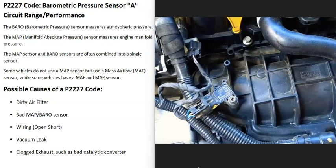It reports that information to the computer, which then adjusts the air-fuel ratio mixture going into the cylinders. When you get a P2227 code, the computer is seeing some kind of problem with this sensor, so it needs to be troubleshot to find out why.